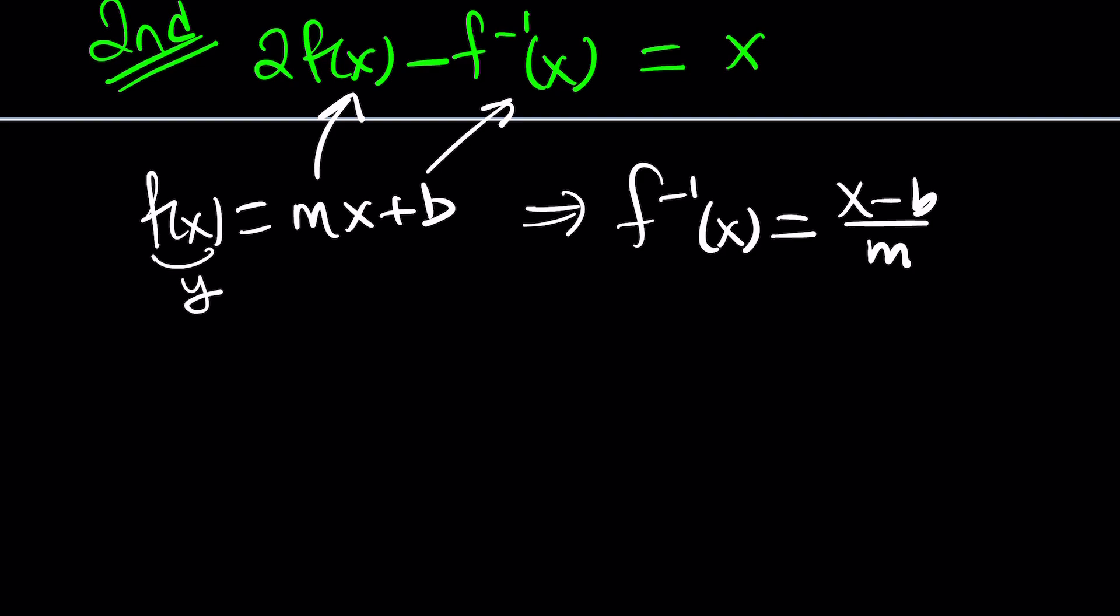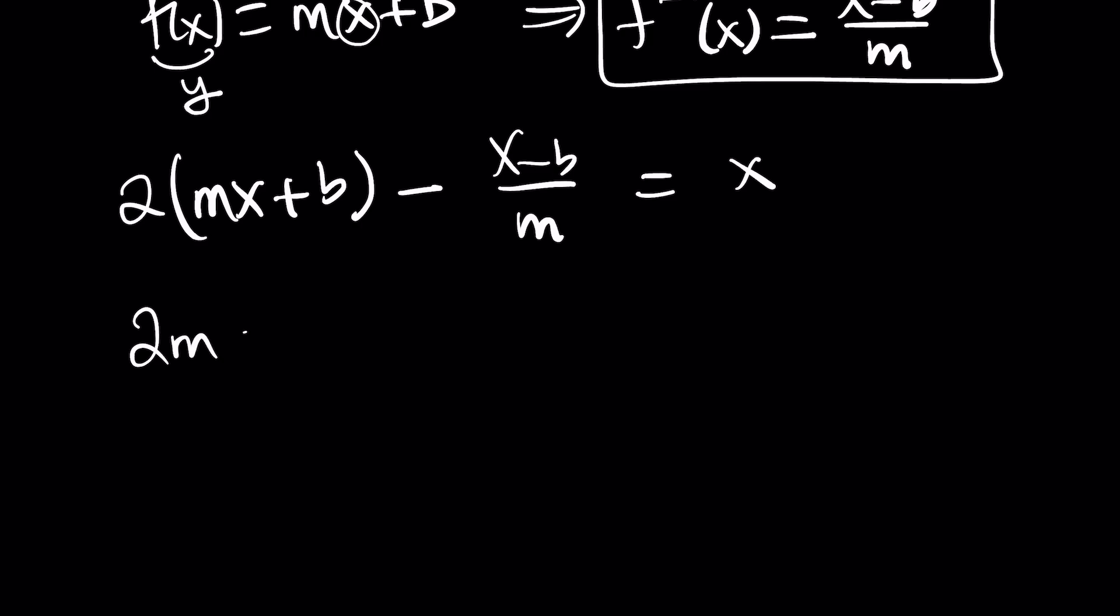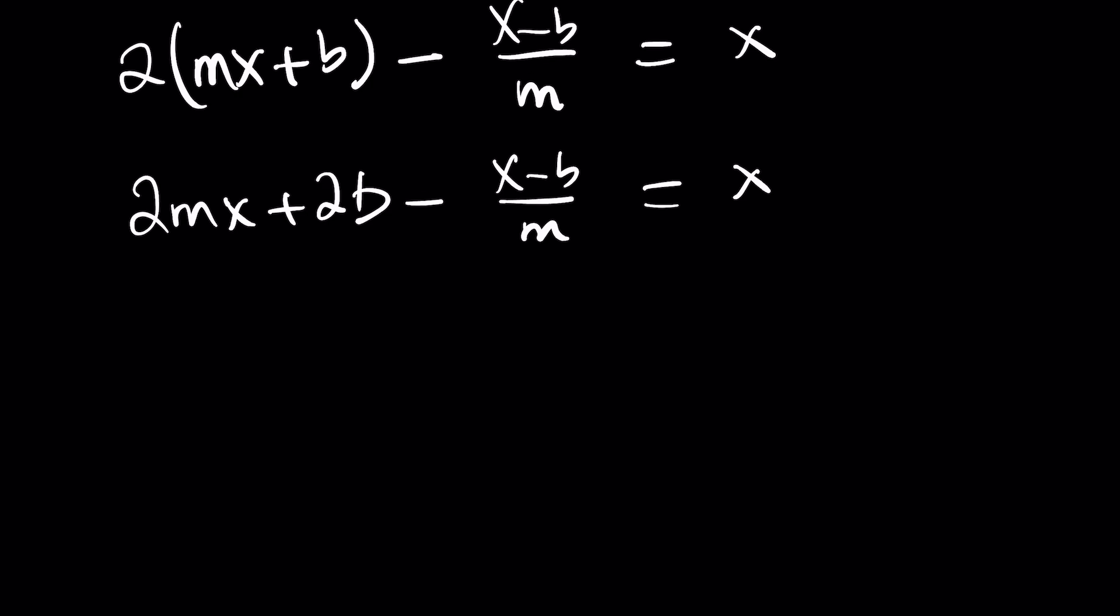You might be wondering, how on earth did you find it? Set f of x equal to y, solve for x, and then replace x and y or switch. You'll get that. Easy. Now we do know what to replace f inverse with. Now let's do it. 2 times f of x, which is 2 times mx plus b minus f inverse, which is x minus b divided by m equals x. Isn't that beautiful? We have an equation where both sides are equivalent for all values of x. So you can change x and set up an equation, but there's a better way to do it. First, let's go ahead and distribute. 2 mx plus 2 b. Allow me to say to be or not to be. That's the problem. Minus this thing equals x.